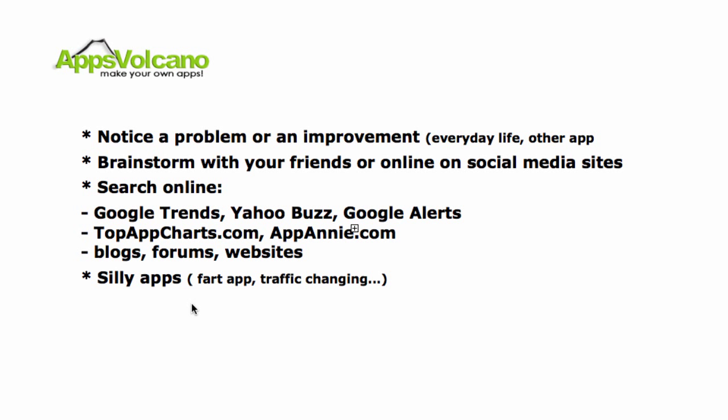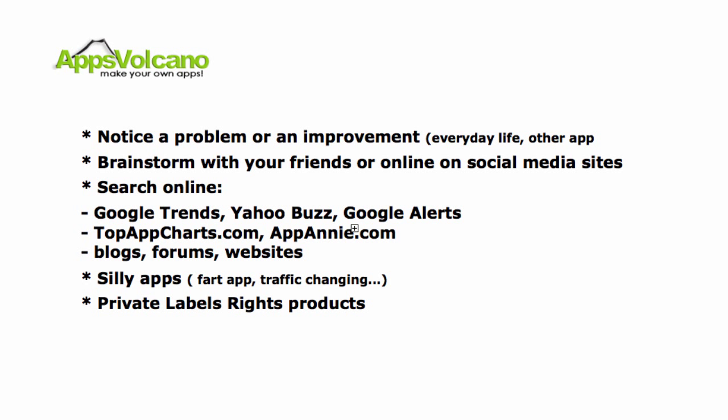The next source is private label rights products. These are websites that offer products you can buy and put your name on. You simply go to those websites, check the categories, pick the products you like, purchase them, and make an app out of it — then sell it. It's a very simple and easy way to make an app and make money. To find out which websites offer this, go to appsvolcano.com/resources.